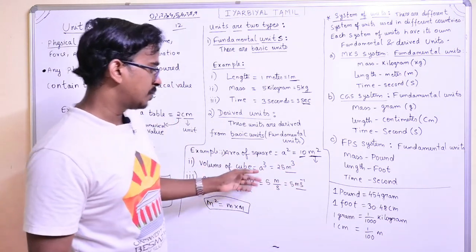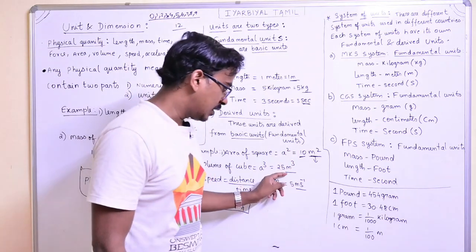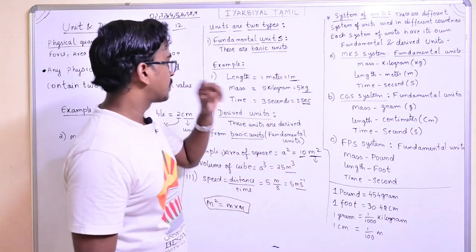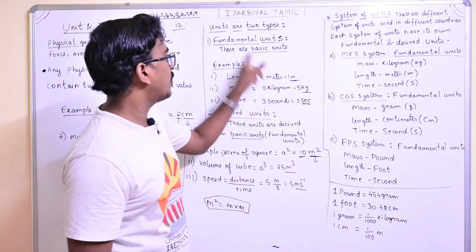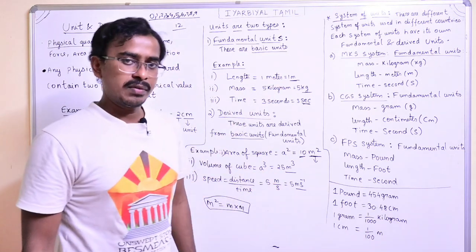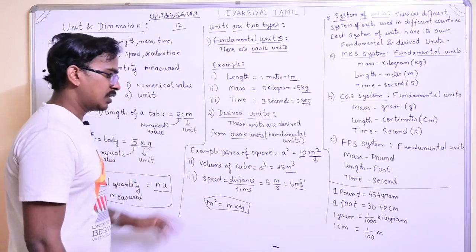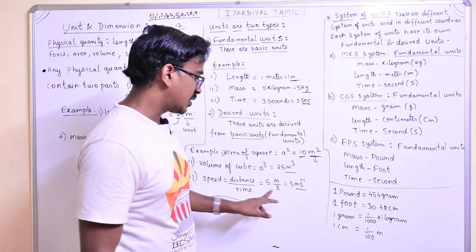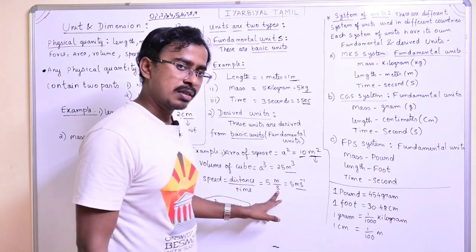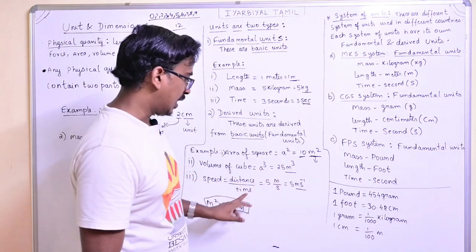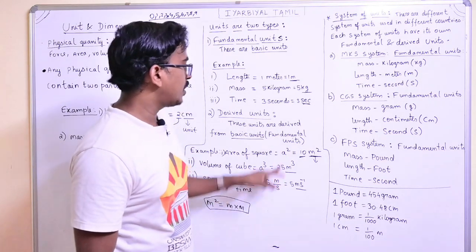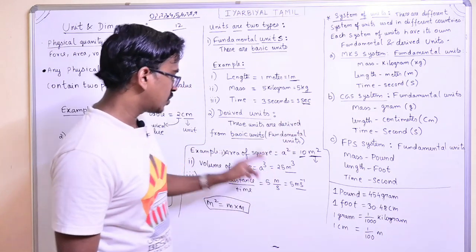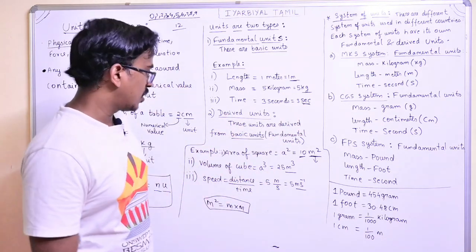If you look at volume of cube — some 25 meter cube — the unit is M³, which is a derived unit. We know speed is distance by time. Distance is measured by meter, time is measured by seconds, so speed is meter per second — that is also a derived unit.